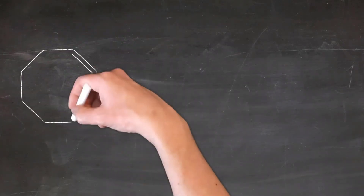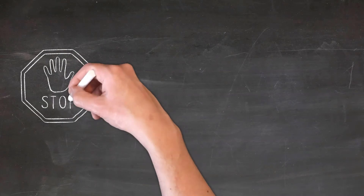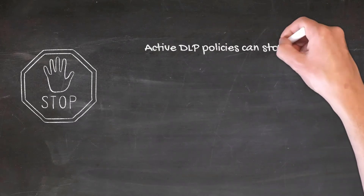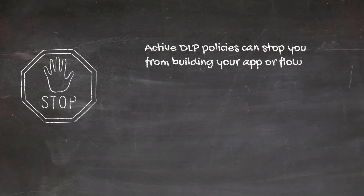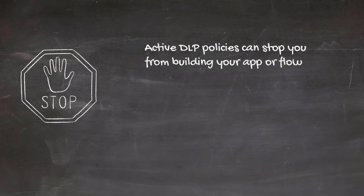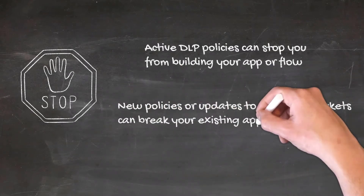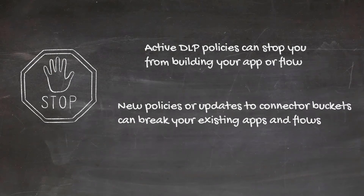As an app maker, you should be aware that an active DLP policy can stop you from building your app or flow. If you need to use a connector that is blocked or is in the no business data category while also needing one from business data, it's not going to let you save your app or flow. Also, if you don't communicate with your administrator, new policies or updates that recategorize connectors can break your existing apps and flows.